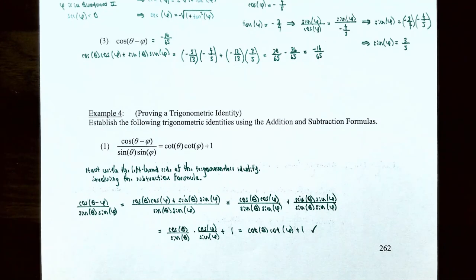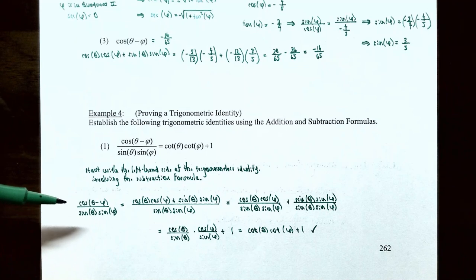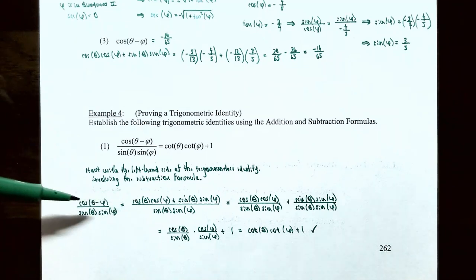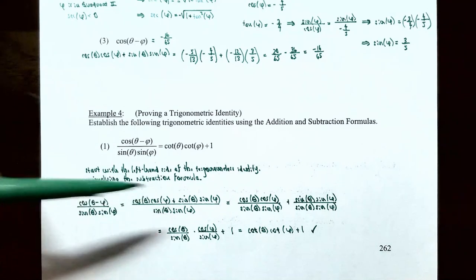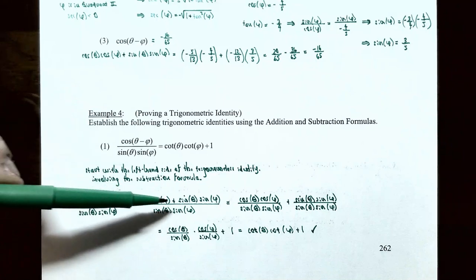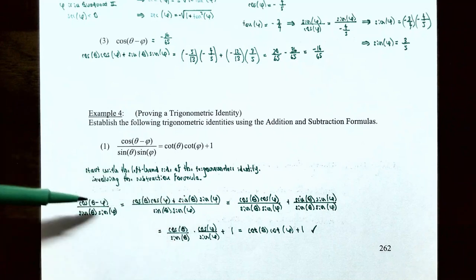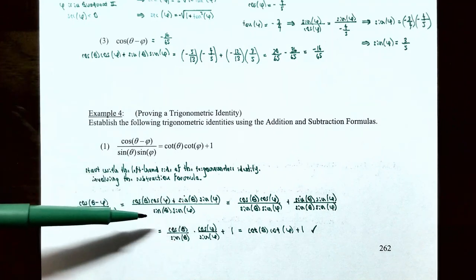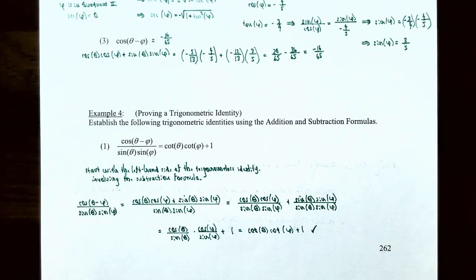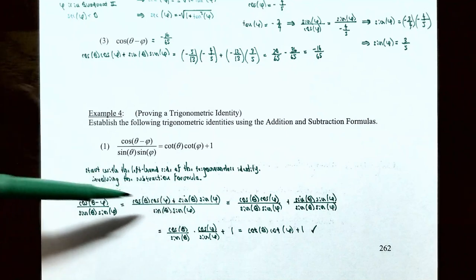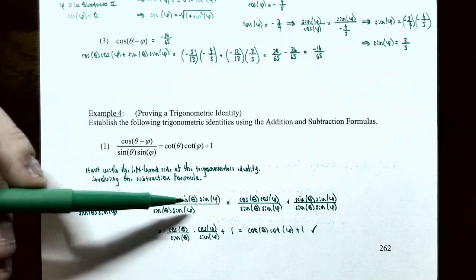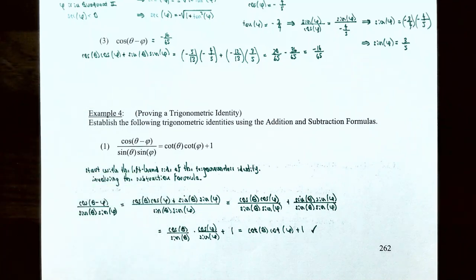In the previous video we talked about the difference formula for the cosine function. Cosine of theta subtract phi is cosine of theta times cosine of phi plus sine of theta times sine of phi — the difference formula for cosine is a sum of two terms — and we'll keep the denominator the same: sine of theta times sine of phi. Notice you have two terms in the numerator and a common denominator of sine of theta times sine of phi.